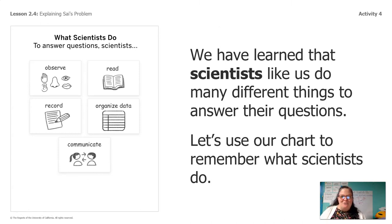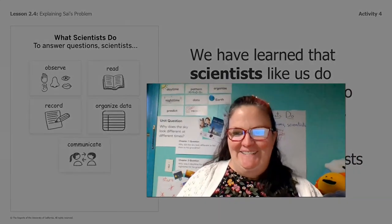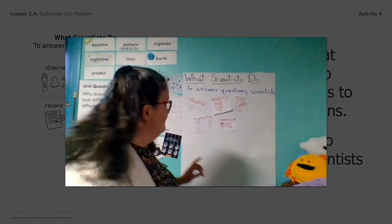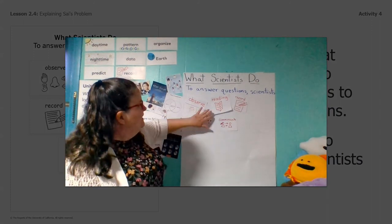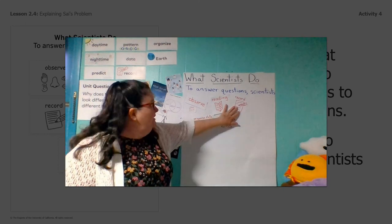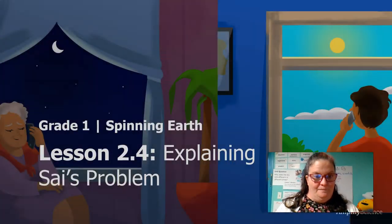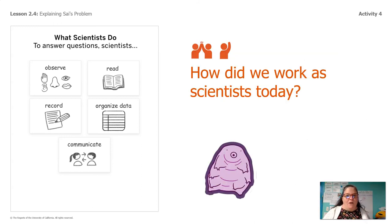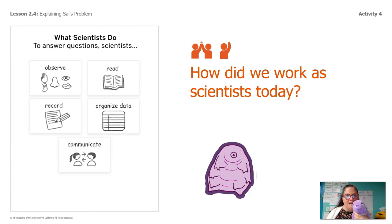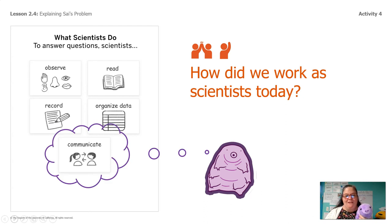Let's look at our chart one more time and remember what scientists do. Scientists observe, they read, they record, they organize data, and they communicate. So of all these things that scientists do, which one do you think we did today? What did we do the most of? Communicate! We communicated by talking to each other and we communicated by writing that letter to Psy.